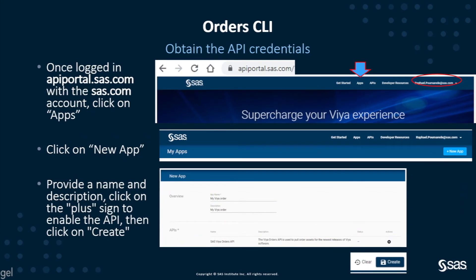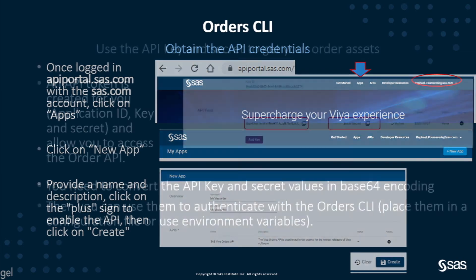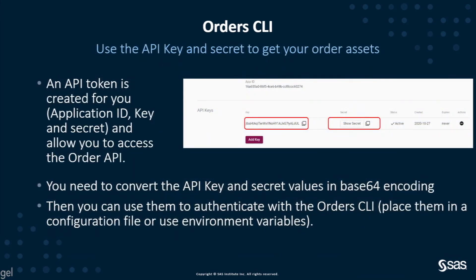You have to log in to the apiportal.com page, and you also need a SAS profile or SAS.com account to be able to log in. Once you are logged in, you can click on the 'New App' button, provide a name and a description, click the plus sign to enable the API, then click 'Create'. Automatically, the API token will be generated for you — you will have an application ID, a key, and a secret.